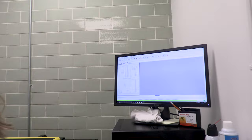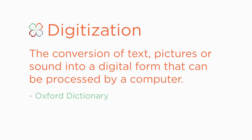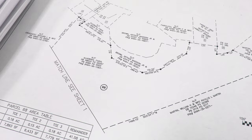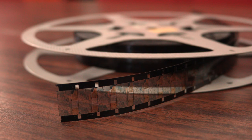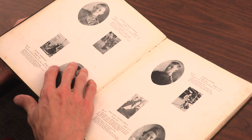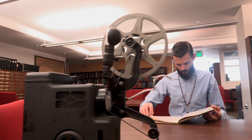The word digitization means the conversion of text, pictures, or sound into a digital form that can be processed by a computer. In the case of print or photos, this usually means using a scanner to create a digital image that represents the original. For audio-visual items, this usually means using special equipment that will play the tape, disc, or film in a way that the sound and moving images can be converted to a computer file. This video will talk primarily about scanning items on paper, but some of the principles apply regardless of what you're working on.